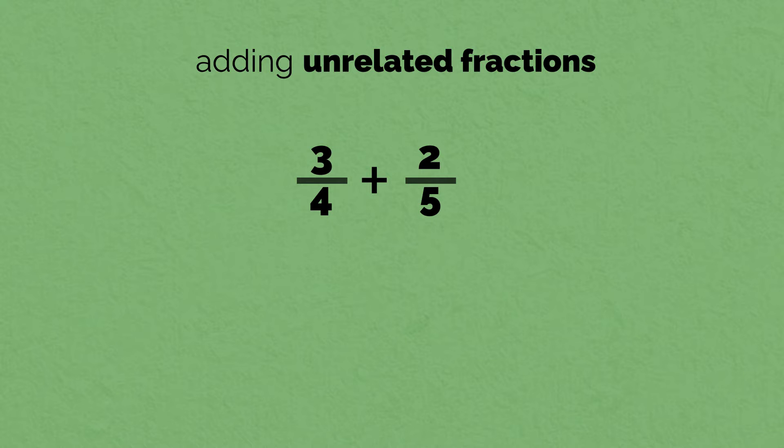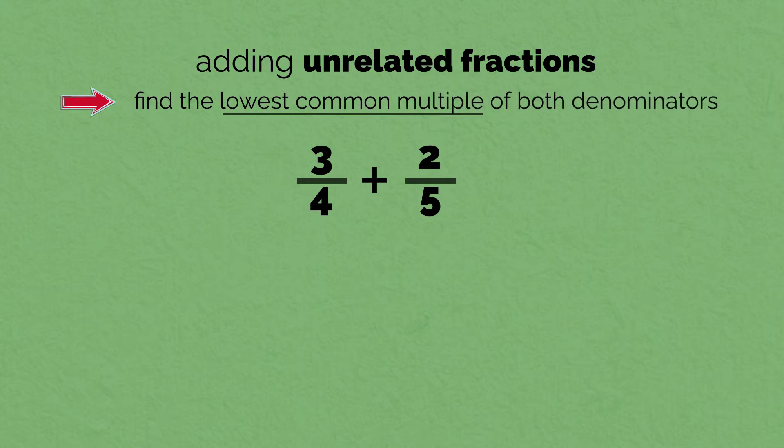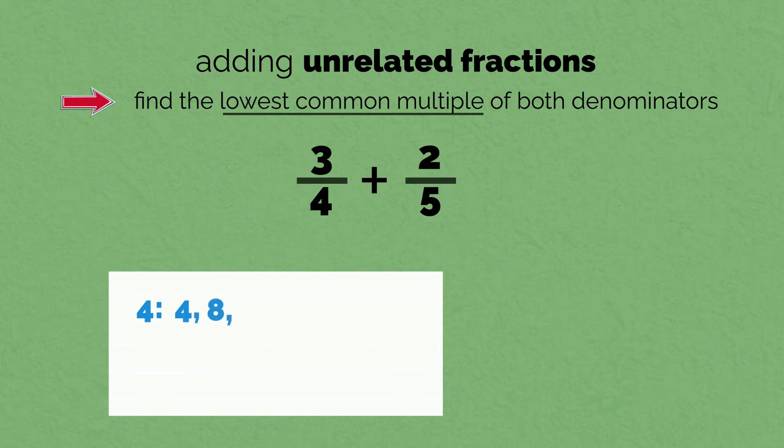Instead, we have to find the lowest common multiple of both denominators. In this case, that is 4 and 5. Here are the first few multiples of 4. And here are the first few multiples of 5. I don't need to list any more because I found the lowest common multiple: 20. How does this help us?